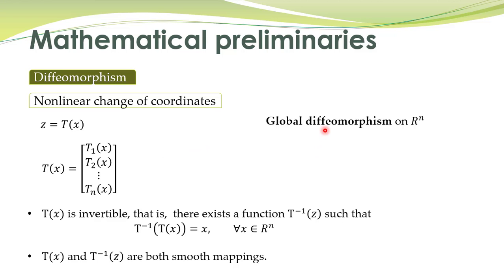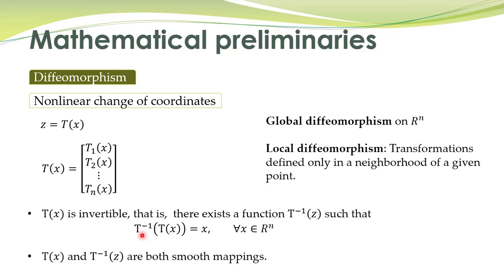We can also talk about global diffeomorphism and local diffeomorphism. If the transformation is defined for all x in the state space and the functions are smooth in the entire state space, then it is a global diffeomorphism. If the transformation is defined only in a domain — that is, only in the neighborhood of a given point — then it is called a local diffeomorphism.